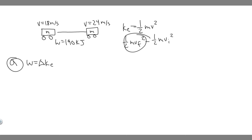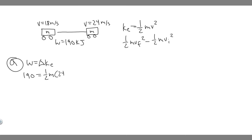That gives you the final kinetic energy minus the initial, which is the change. We know the change in kinetic energy is equal to 190 kilojoules. So this tells us 190 equals one-half m times v_final squared — v_final is 24 — so 24 squared, minus one-half times m times v_initial squared, which is 18 squared. Now, keep in mind I wrote 190 kilojoules, but it actually needs to be 190,000 joules. We must convert to joules, not kilojoules.